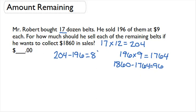So on the eight belts that he has left, he wants to make $96. So if we take $96, we divide it between the eight belts he still has left to sell, we'll find that he wants to make $12 on each belt.